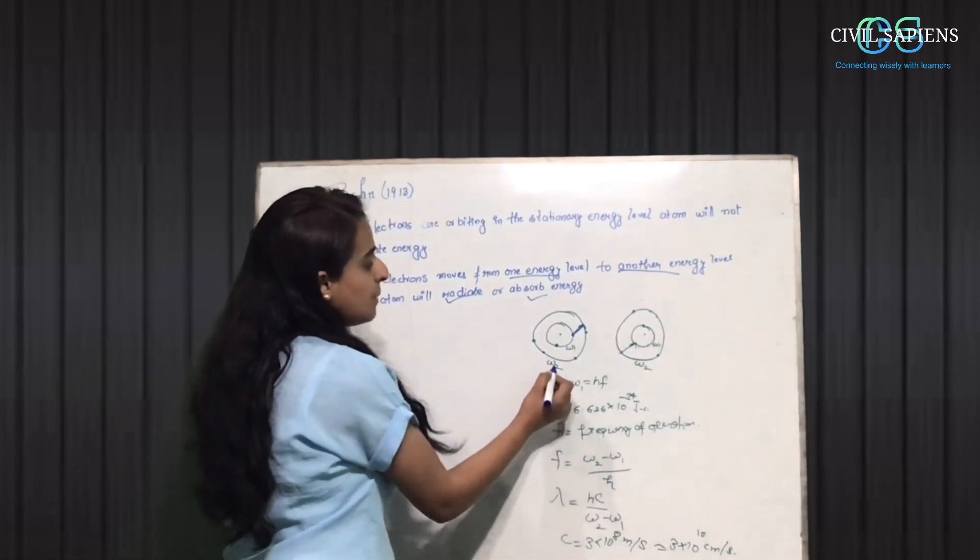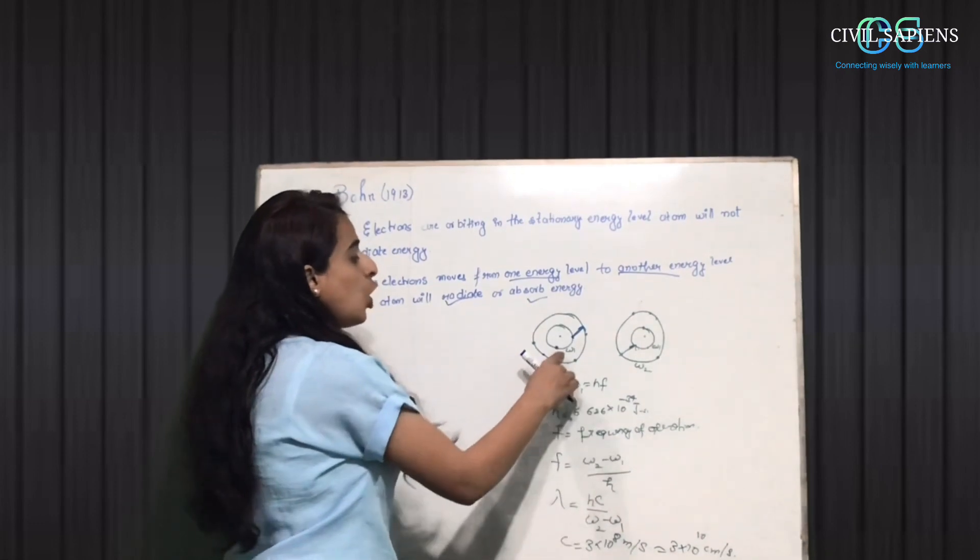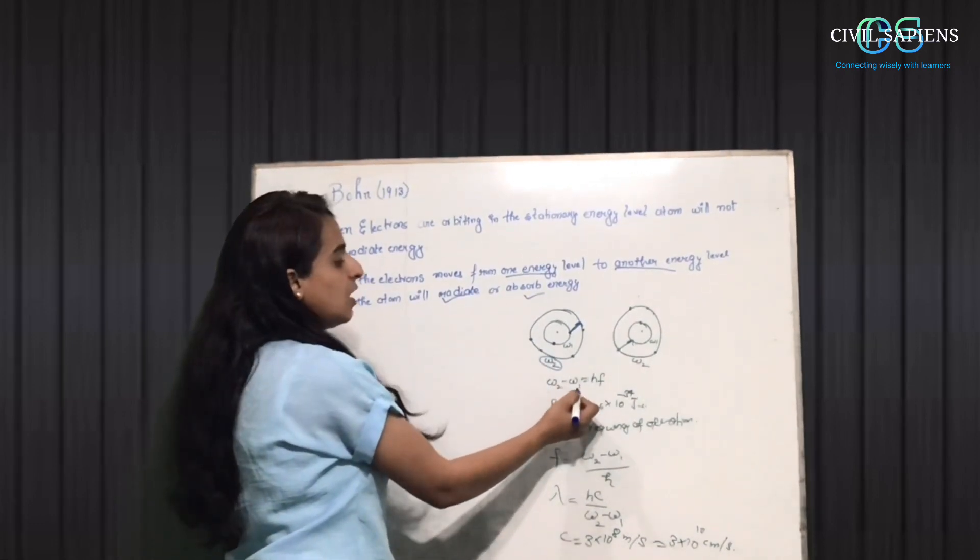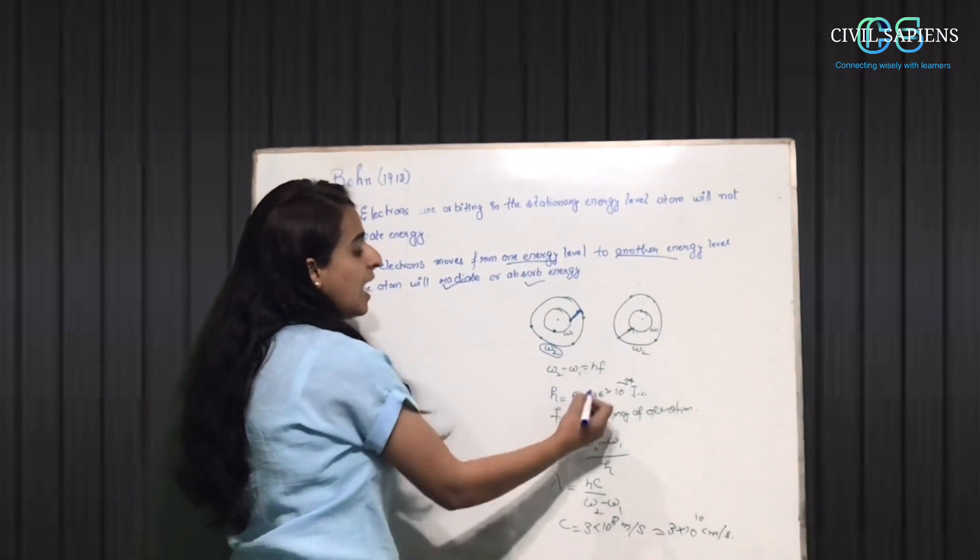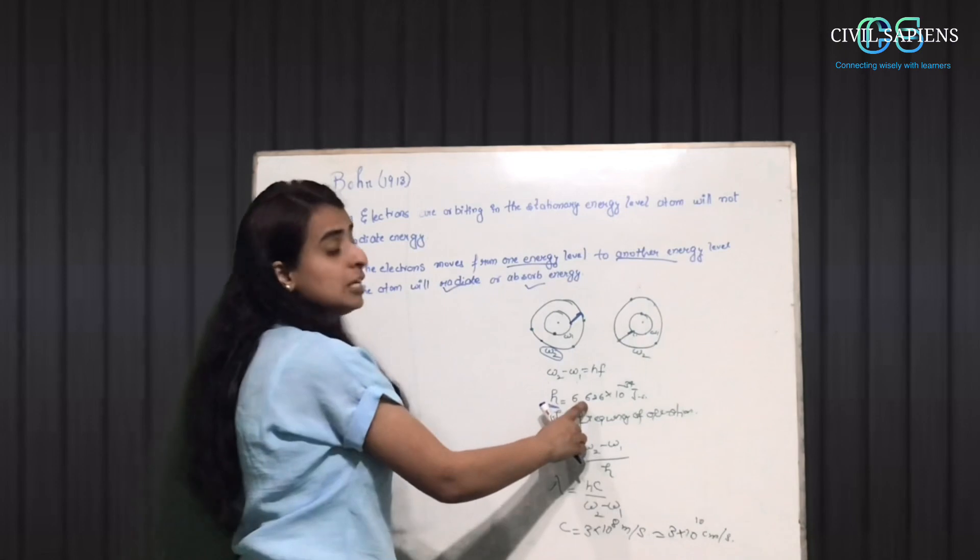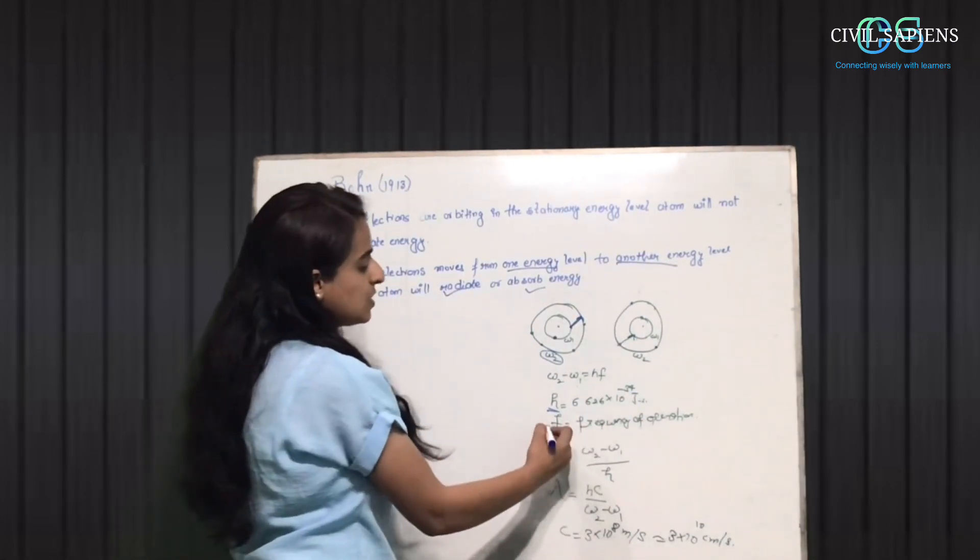Remember to measure this, we thought that our higher energy level is E2, and the lower energy level is E1. So E2 minus E1, that will be equal to hf. H is our Planck's constant, which is 6.626 into 10^-34 Joule per second. And f is our frequency of operation.